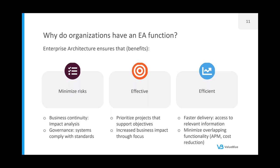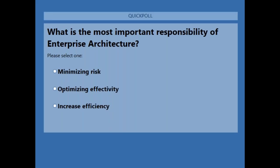Now I want to ask you a question — the first poll. Which of these responsibilities is most important for your organization? Is it minimizing risk, being more effective, or being more efficient? I think I just launched the poll and you can answer now. I'll give you about 30 seconds. I'm curious — what do you think is most important for your organization? What's the biggest responsibility of the architect?